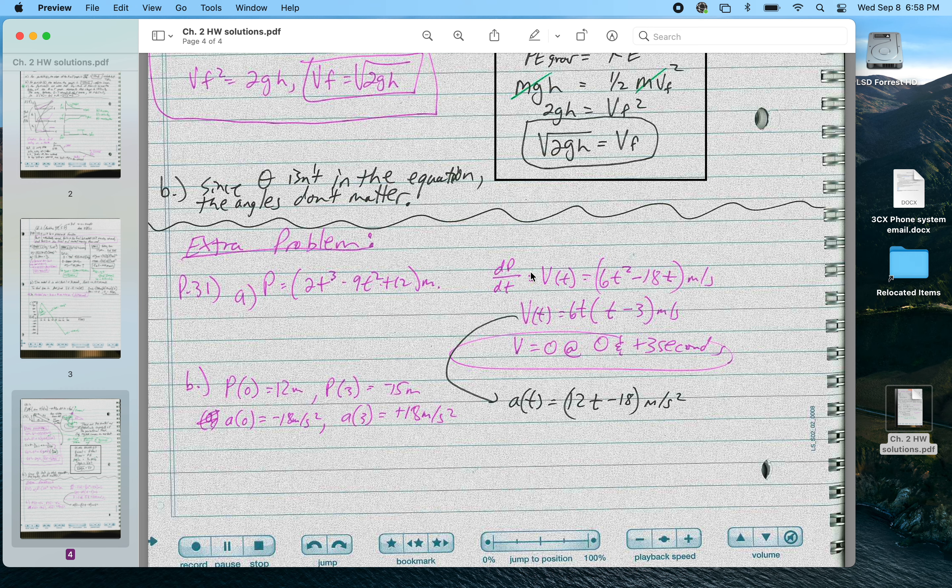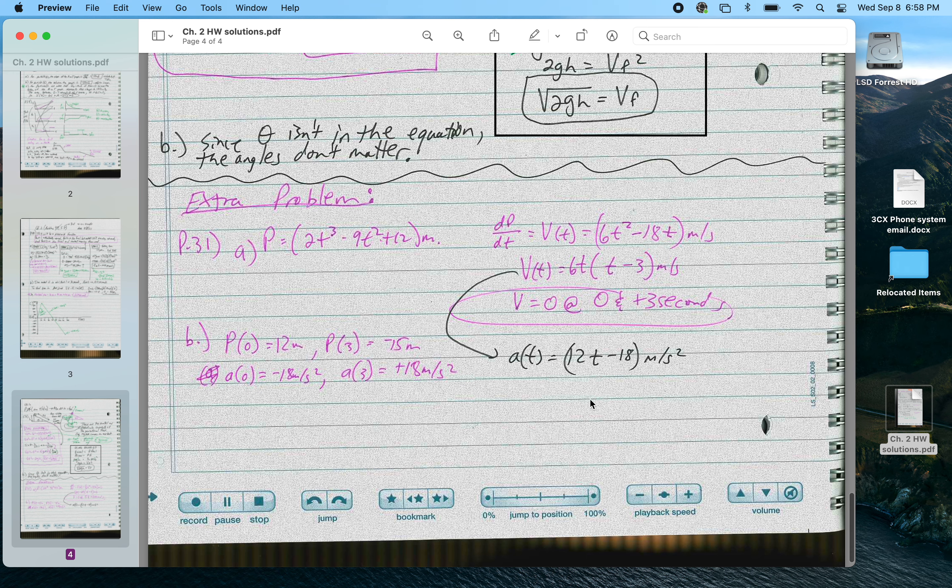If I take the second derivative of position with respect to time, I get an acceleration function of 12t minus 18 meters per second squared. So at 0 seconds, this gives me an acceleration of negative 18 meters per second squared. At 3 seconds, it gives me an acceleration of plus 18 meters per second squared.